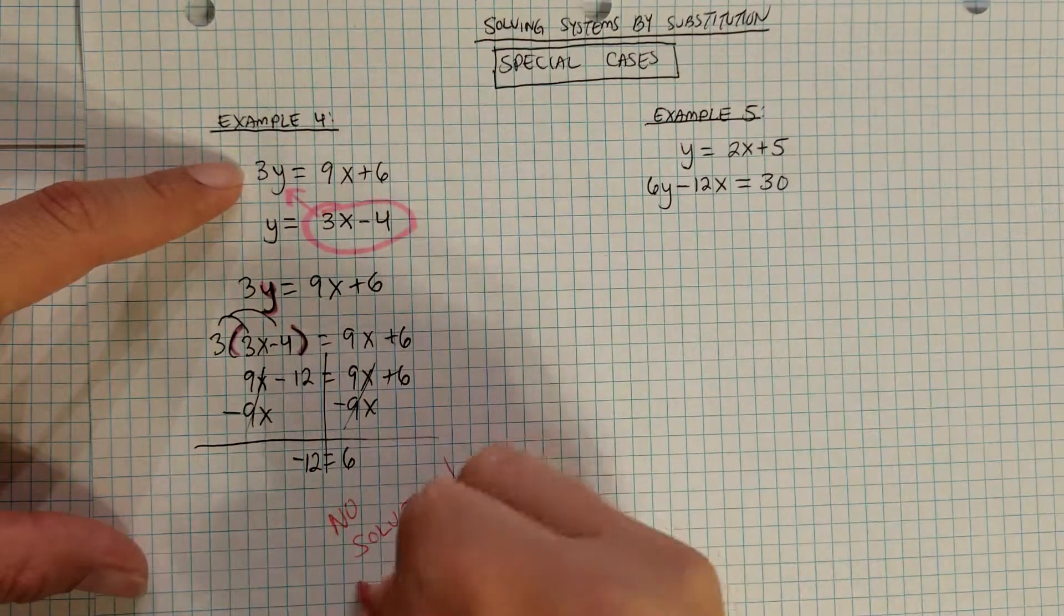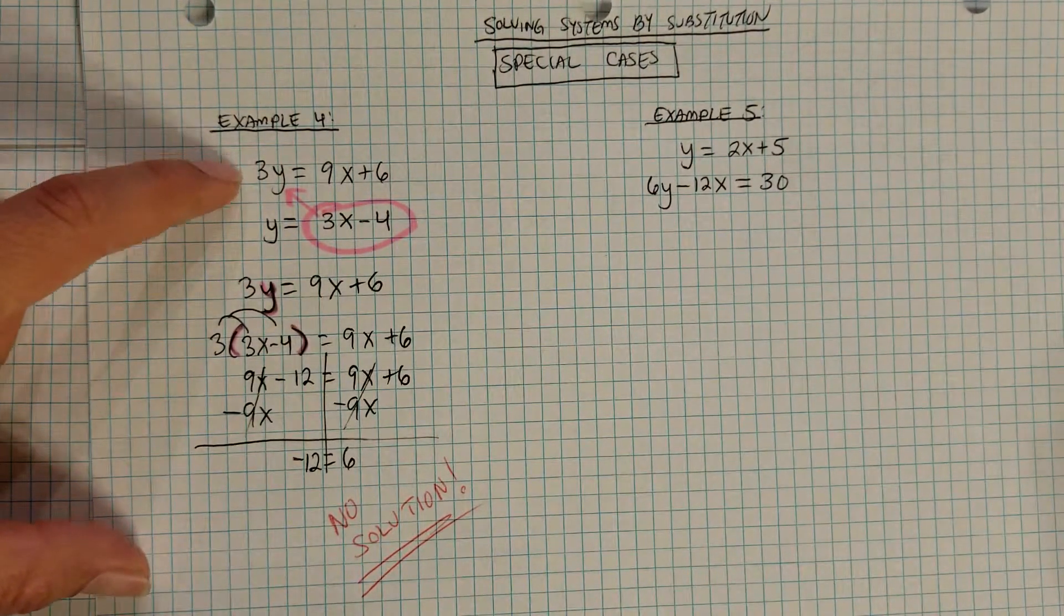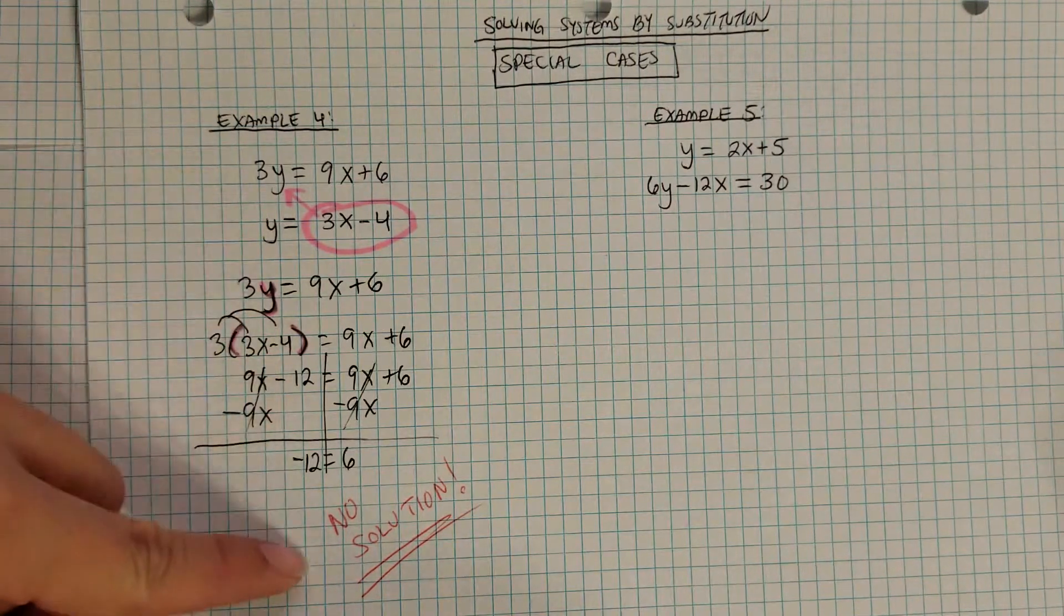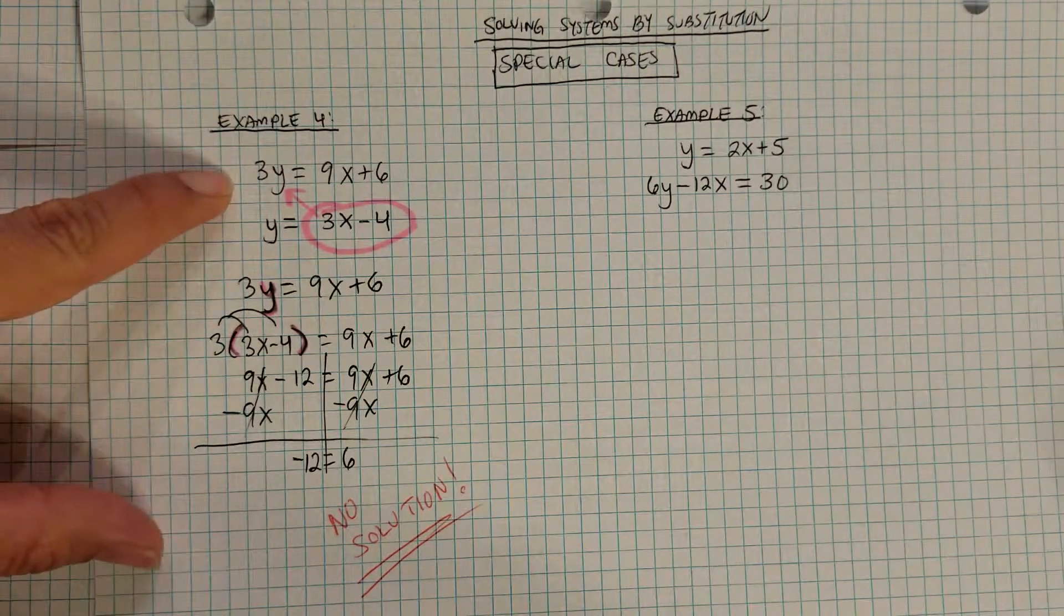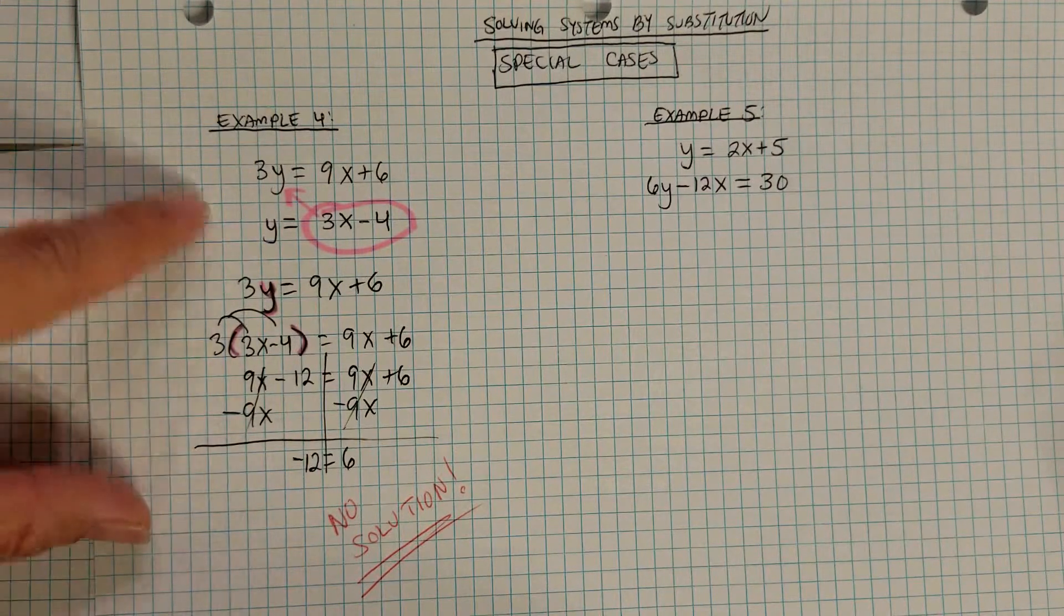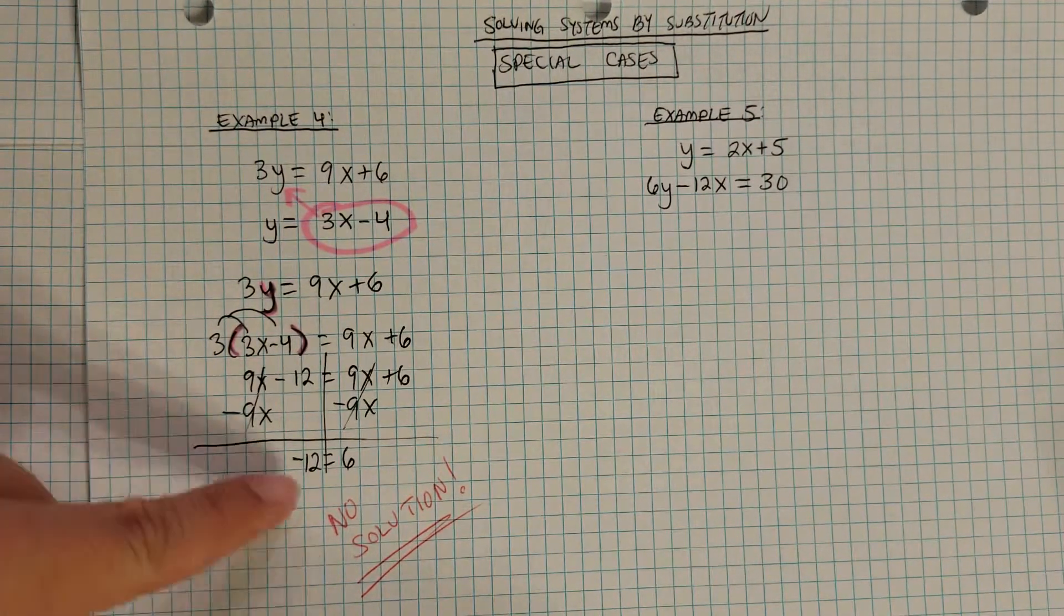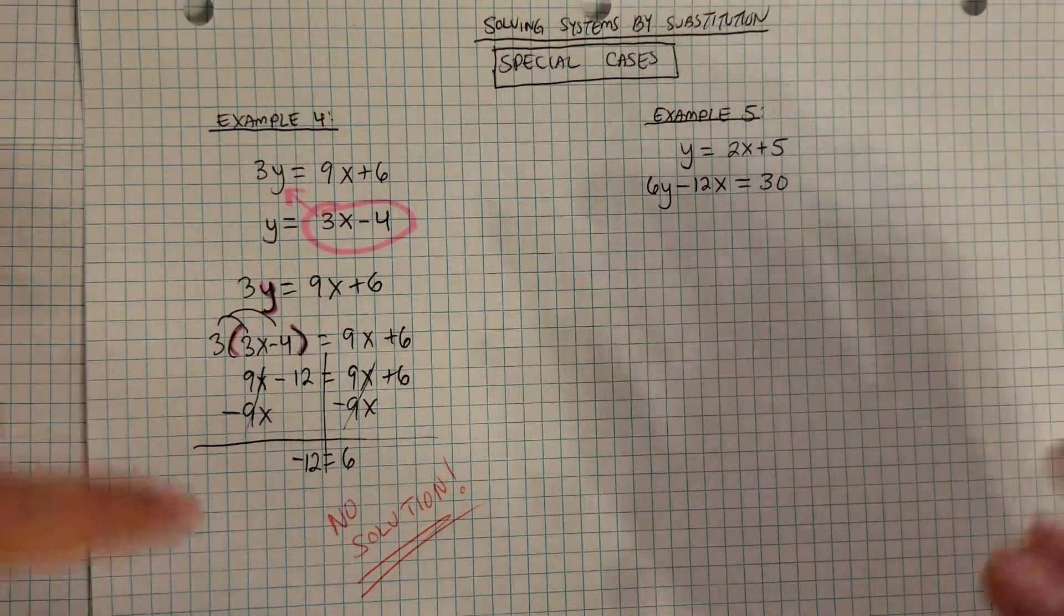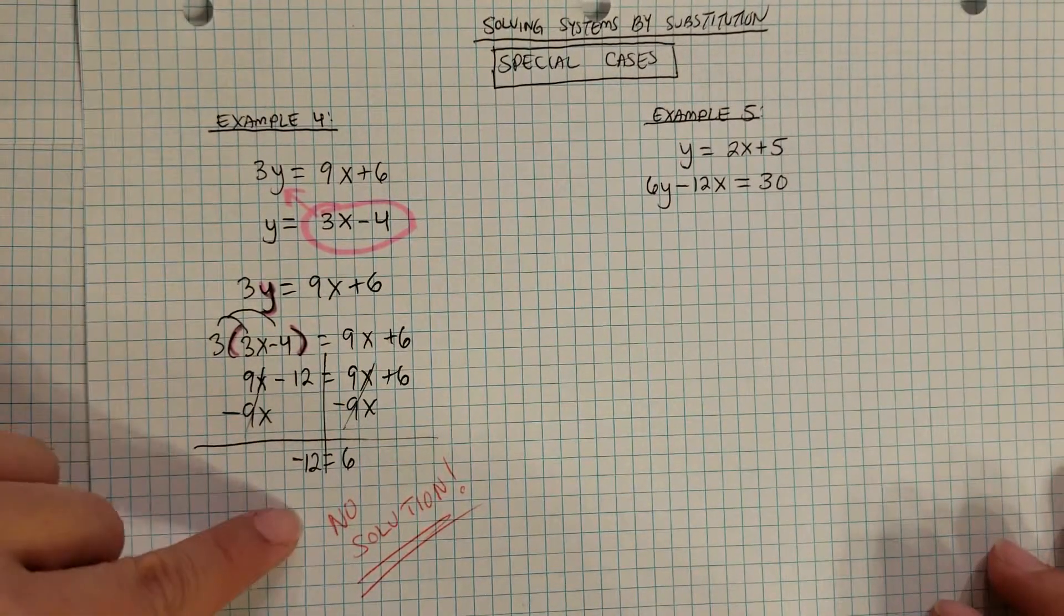Now, once you guys get to the graphing part of this, you would see that these lines are actually parallel, therefore they're never going to cross. So when you have a solution to a system, that means that's the place where the lines cross. If you have no solution, that means that these lines actually never cross, because they have the same slope and they start at different y intercepts. So that's one special case, no solution.